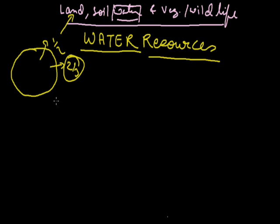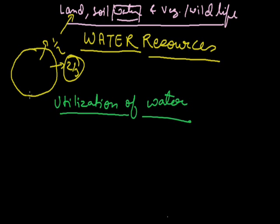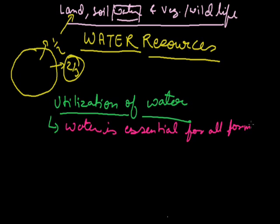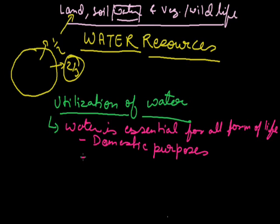The first topic of water resources is about the utilization of water. How do you use water? We are utilizing water for different purposes because water is essential for all forms of life. We use water for domestic purposes in our house for bathing, cleaning, eating, etc. Agriculture - India is an agricultural nation and the maximum part of fresh water is used for agriculture purposes.